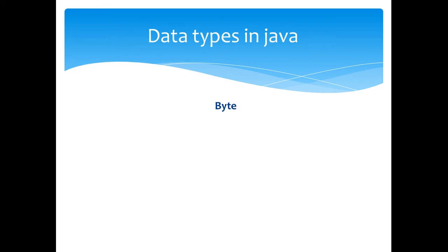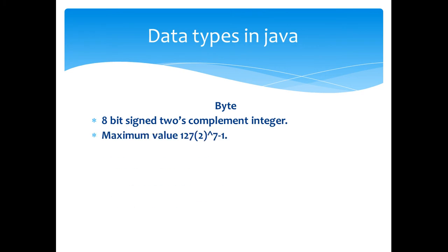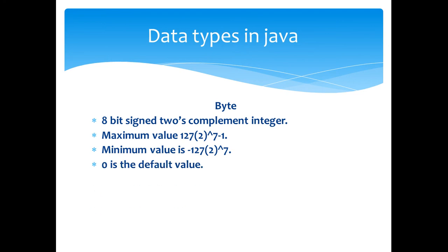Now we are going to look at each of these primitive types separately. The first one is the byte type. It is an 8-bit signed two's complement integer. The maximum value is 127 (2 raised to 7 minus 1). Minimum value is minus 128 (2 raised to 7). Zero is the default value. Example: byte a is equal to 200, byte b is equal to minus 100.